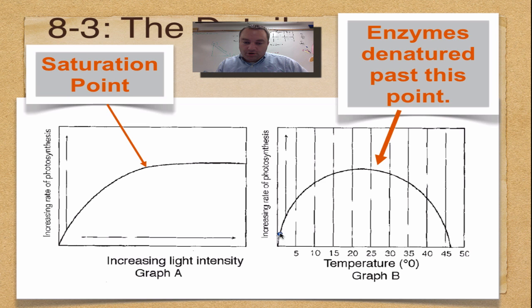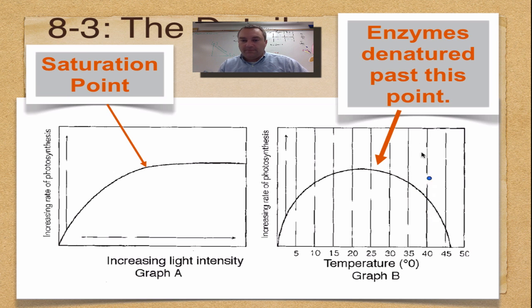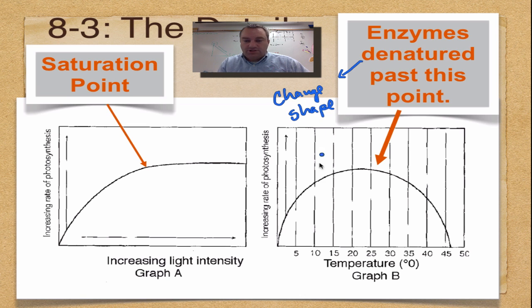For temperature: as you get warmer you increase the rate of photosynthesis until you reach a peak. If you go past it, the enzymes that cause photosynthesis to occur will break down — no enzyme, no work, and you're done. Remember, denature means to change shape, and a change in shape is bad.